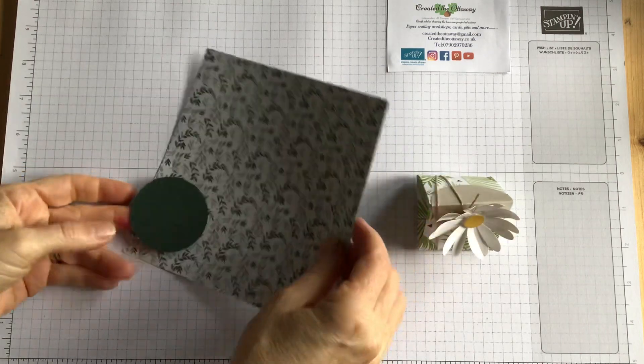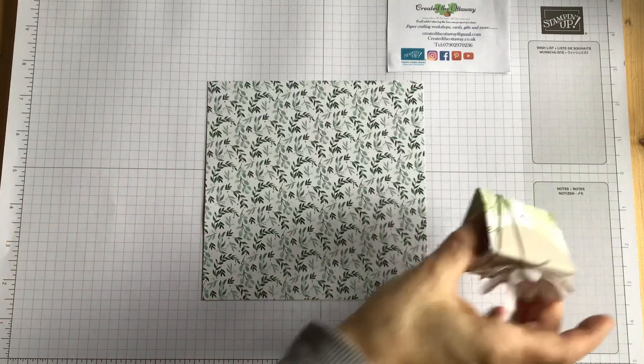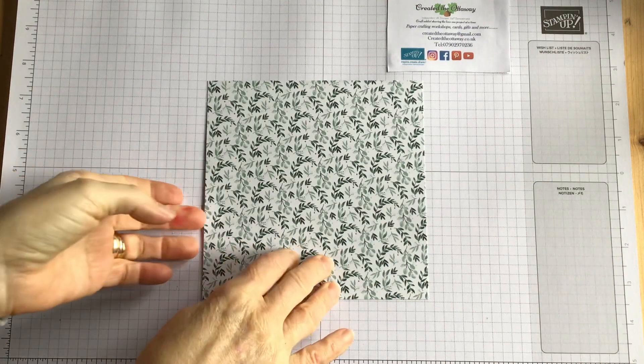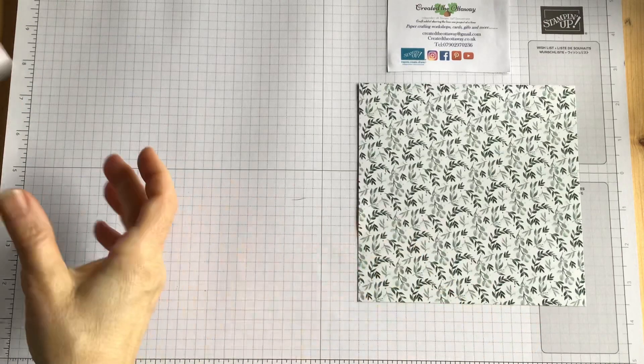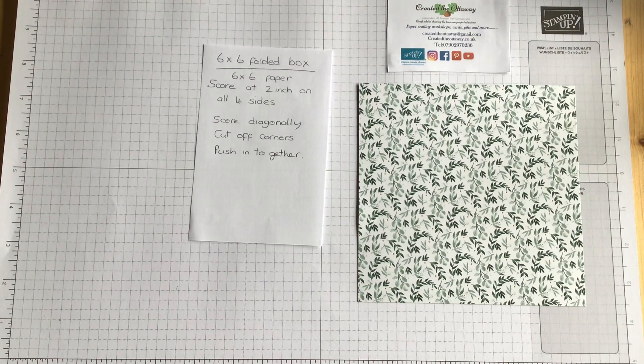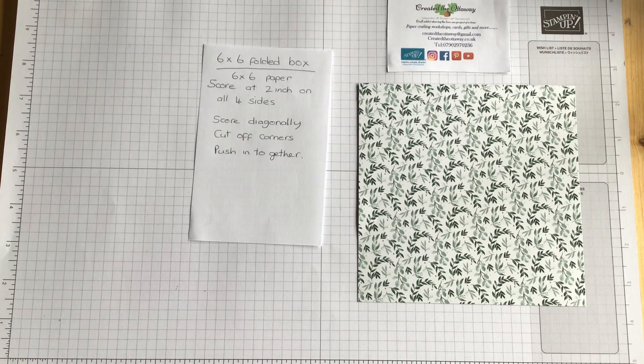So it's just a 6x6 piece of paper. These are the instructions, as you can see they're really really simple. Just a 6x6 piece of paper, score on all four sides at 2 inches, score diagonally in each corner.